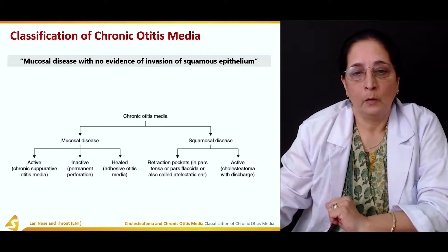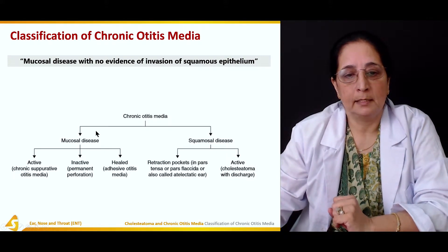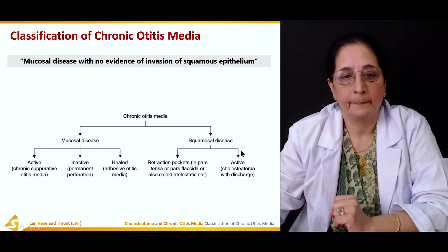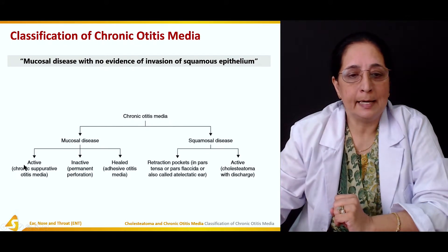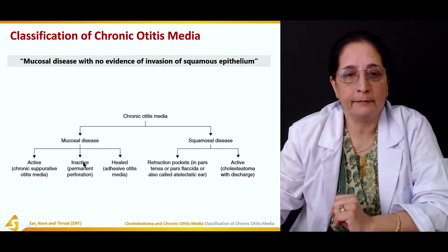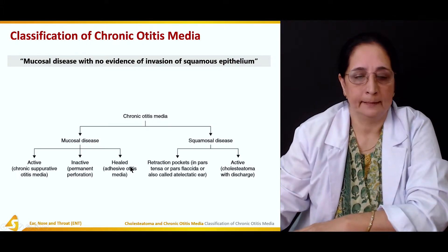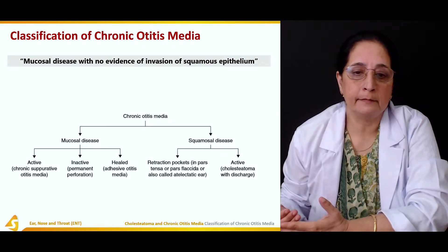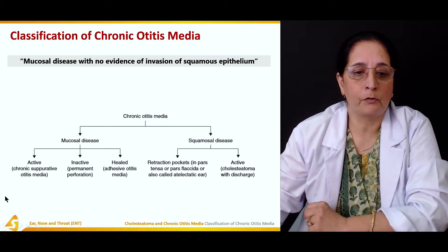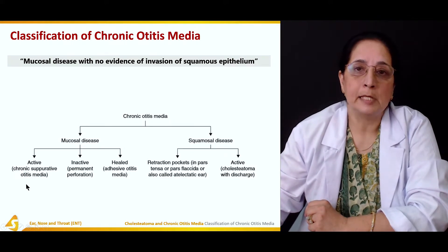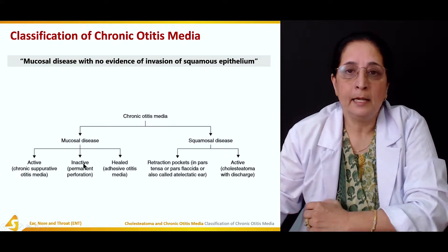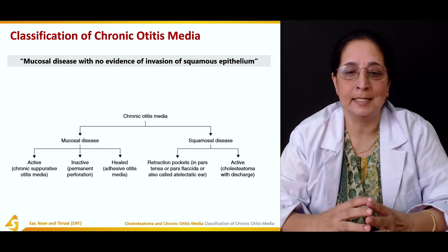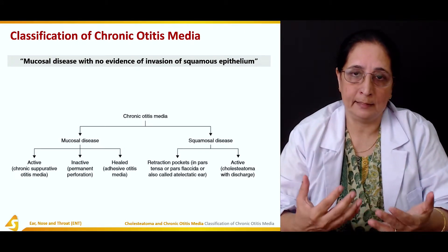Chronic otitis media can be either mucosal disease or squamous disease. In mucosal disease, it can be active, inactive, or healed — three types. Active is chronic suppurative otitis media. In inactive there is permanent perforation, and in healed there is adhesive otitis media.